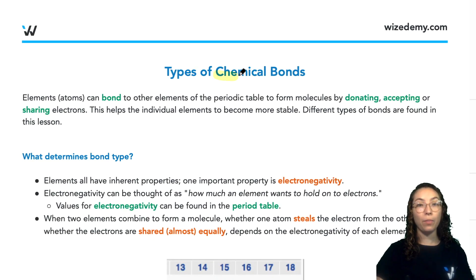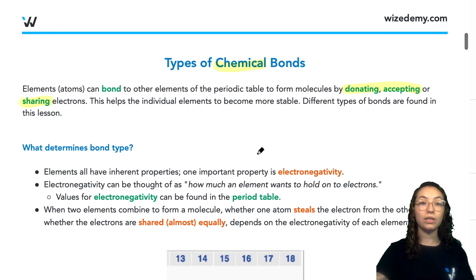Let's talk about some types of chemical bonds. Elements of the periodic table can bind to one another to form molecules either by donating, accepting, or sharing electrons between one another. This actually helps the individual elements to become more stable when they share these electrons or donate them to each other. There are a few different types of bonds and we'll discuss a couple of those in this lesson.